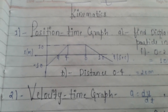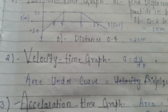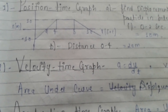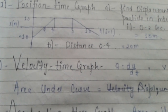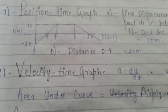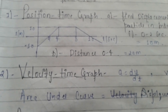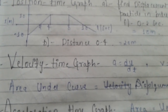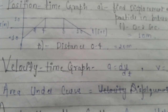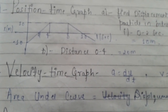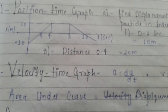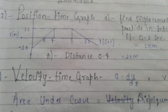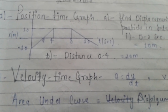The second graph is the velocity-time graph. If a velocity-time graph is given, we can calculate displacement by finding the area under the graph. We will also use the formula a = dv/dt, and by differentiating the velocity equation we can find acceleration.